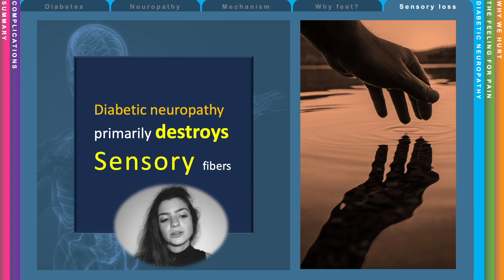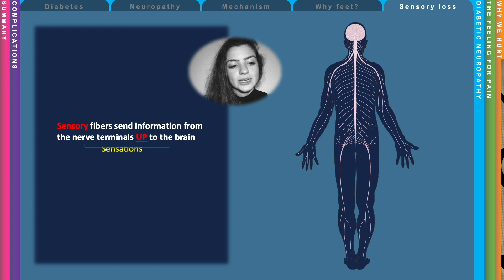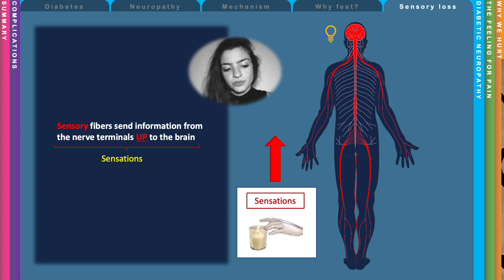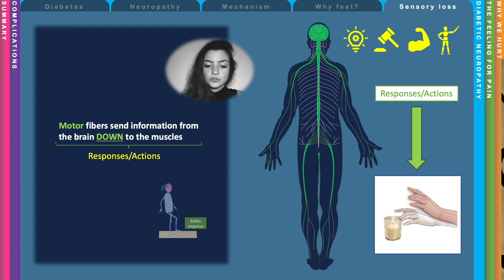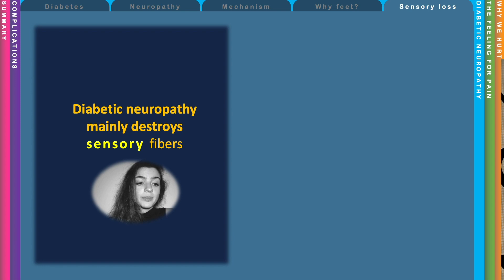Diabetic neuropathy primarily destroys sensory fibers. Sensory fibers are those that send signals up to the brain from the environment — they are responsible for sensations such as feeling the warmth of a candle or the pain of stepping on a nail. Motor fibers send information from the brain down to the muscles to trigger responses.